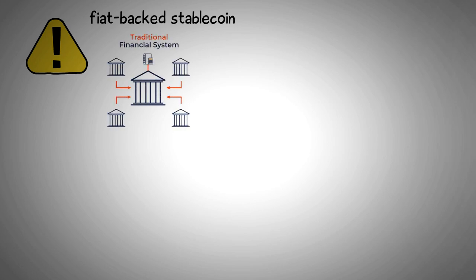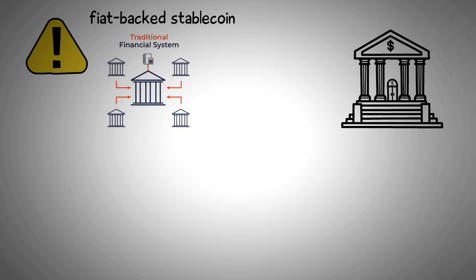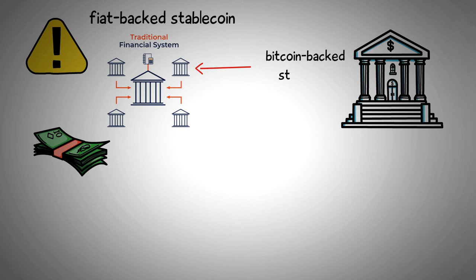A fiat-backed stablecoin, for instance, may be more stable because it is linked to a centralized financial system, which has an authority figure or a central bank that can step in and control prices when valuations are volatile. Stablecoins that aren't linked to centralized financial systems, like a Bitcoin-backed stablecoin, may change drastically and quickly in part because there is no regulating body controlling what the stablecoin is pegged to.